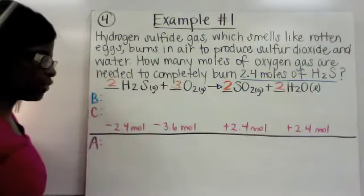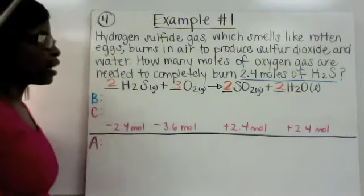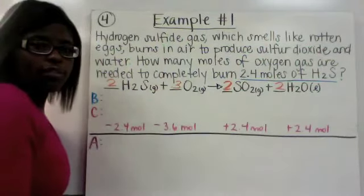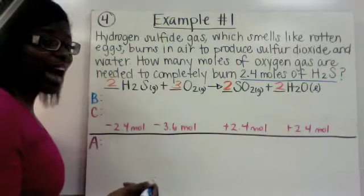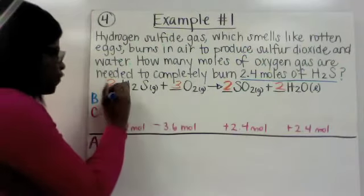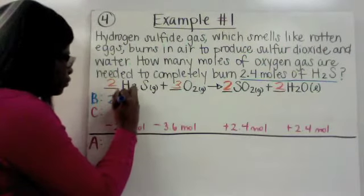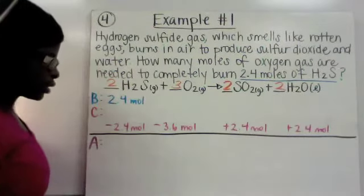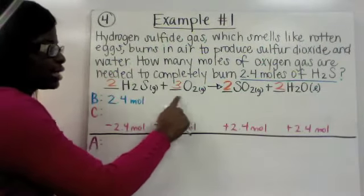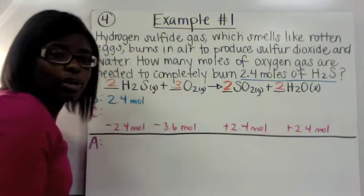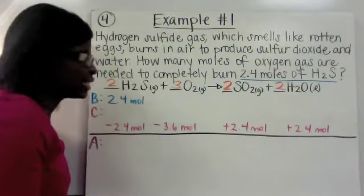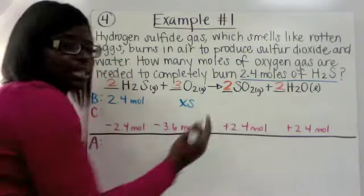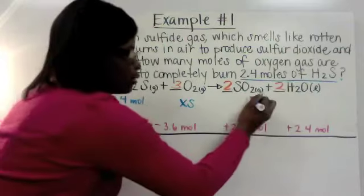Now we're going to plug our information into our BCA chart. We're going to start with what it gave us — 2.4 moles of hydrogen sulfide gas — so we're going to fill in 2.4 here. Remember, it told you to include your units. It did not tell us the amount of oxygen, so if it does not tell you the amount, we're going to assume that it's an excess — so we're going to put XS here. For our products, they have not been created yet, so we're just going to put zero there for now.